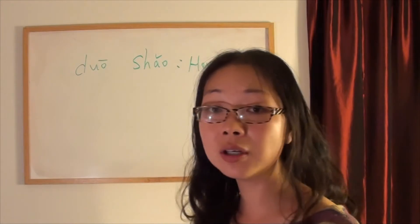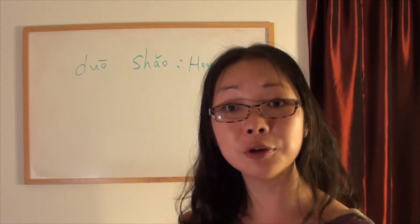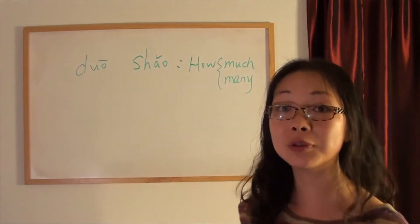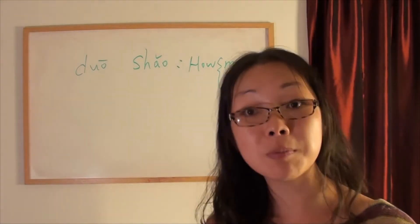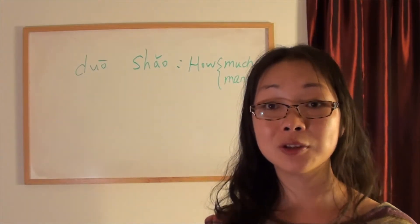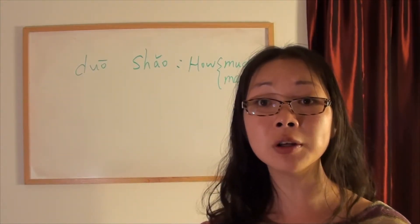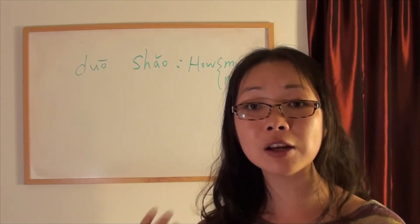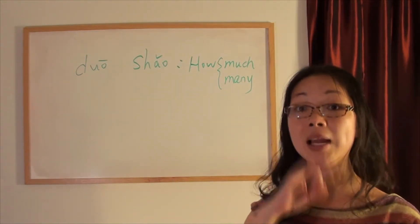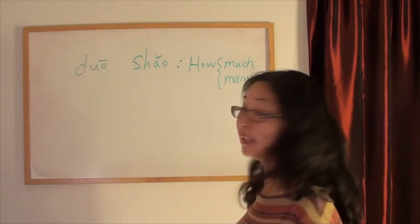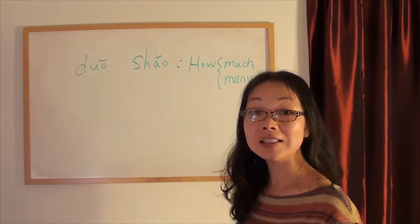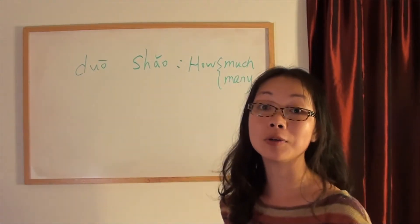Since you've learned 多少, ask yourself: whenever you see 'how many' or 'how much' in English, how do you say that in Chinese? And remember — when you're doing translation, structure and order are the most important things. How do you figure out the order or structure? Three steps. That is the most important thing I want to tell you today.